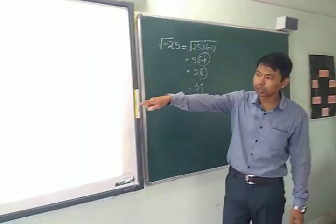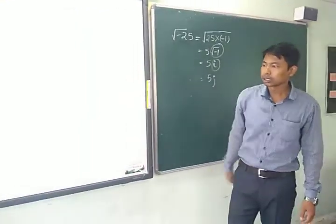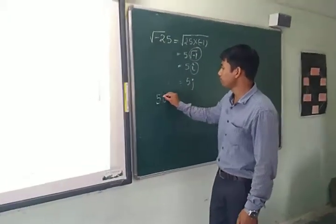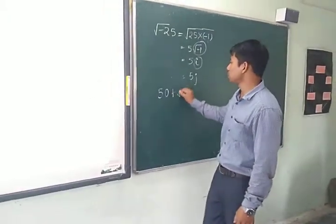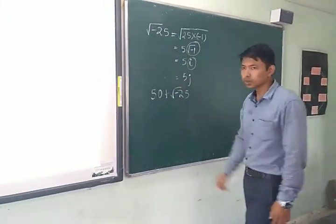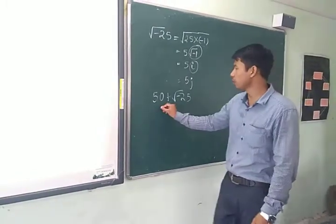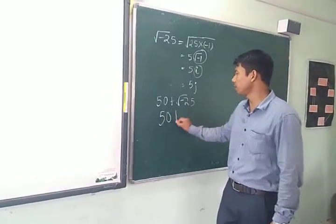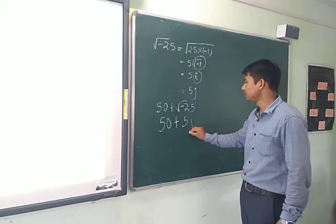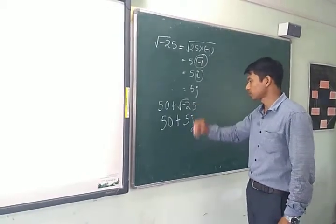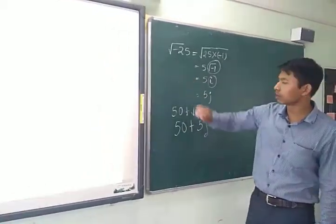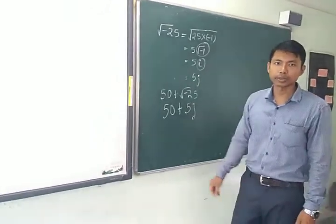The other part is the real part. For example, 50 plus the square root of minus 20 would be written as 50+5j. In this way, complex numbers are written in Python. Thank you.